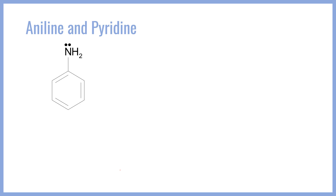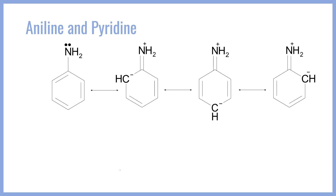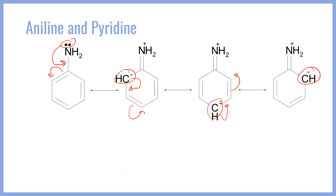Let's look at aniline, which has a nitrogen heteroatom with a lone pair adjacent to a large conjugated pi system — the benzene ring. All of the possible resonance structures arise as follows: we take the lone pair and move it into a double bond, which kicks that double bond up onto the carbon as a negative charge. That carbon's lone pair then moves its electron density further, giving resonance structures with negative charges at the ortho and para positions relative to nitrogen.